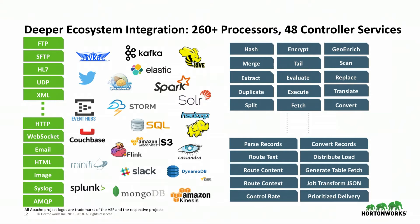Pretty much anything that's been on the Apache homepage in recent years we have some interaction with, plus all kinds of standards, protocols, and text formats. We have record parsers that efficiently process large batches of data in arbitrary formats. You can even script your own. For proprietary protocols or secret algorithms, you can write a custom processor in simple Java using a Maven archetype. The framework handles scheduling and property validation, so it's very easy to build custom processors you can drop into any installation.